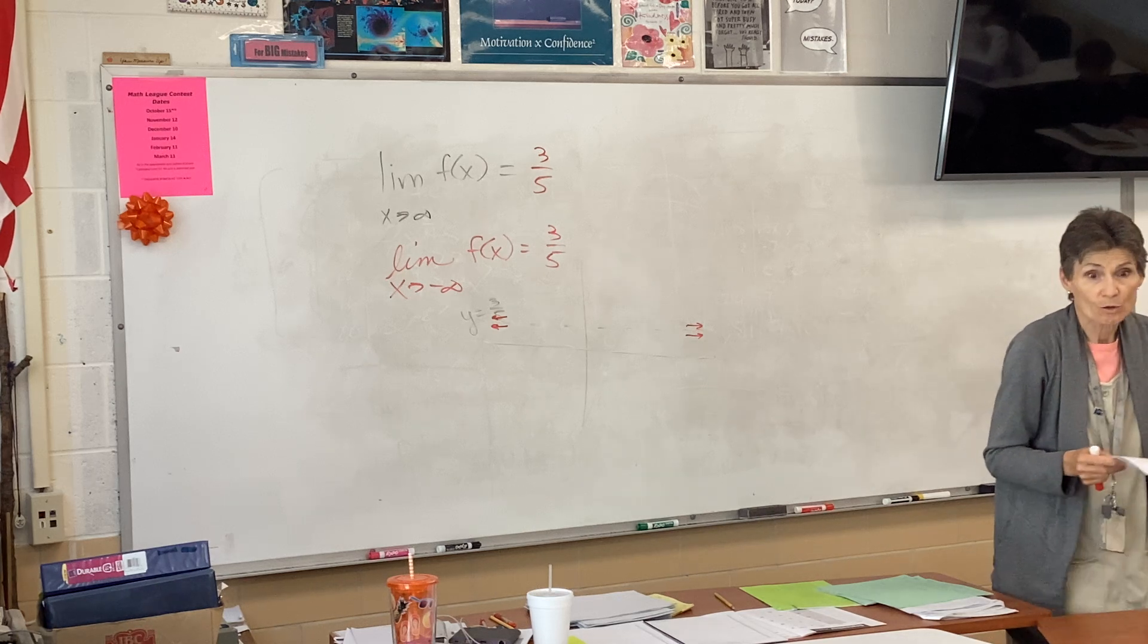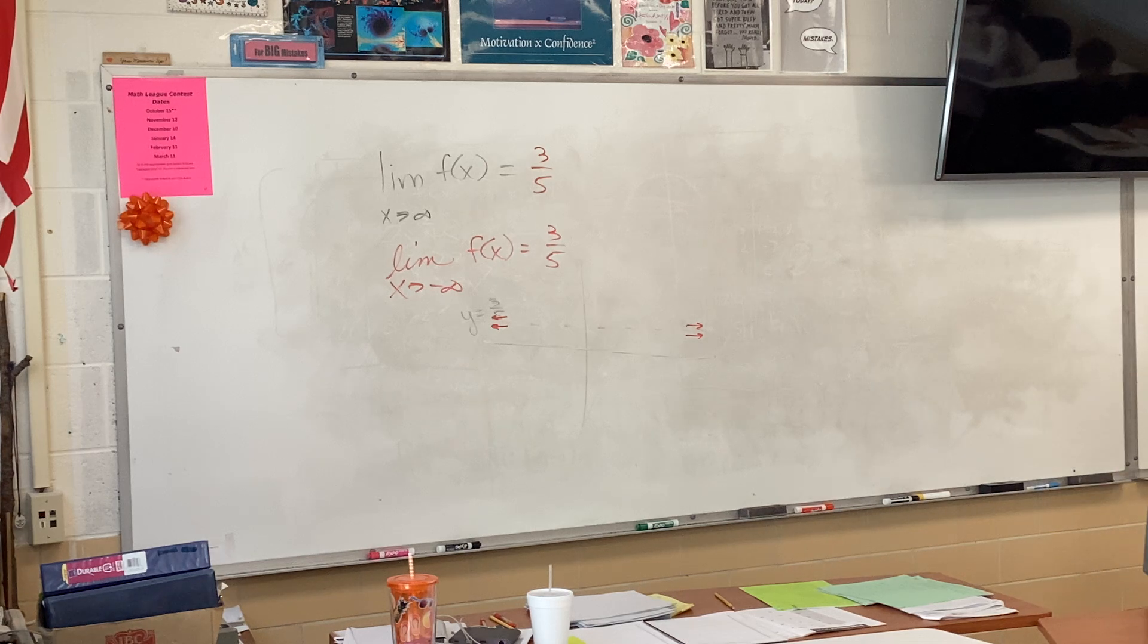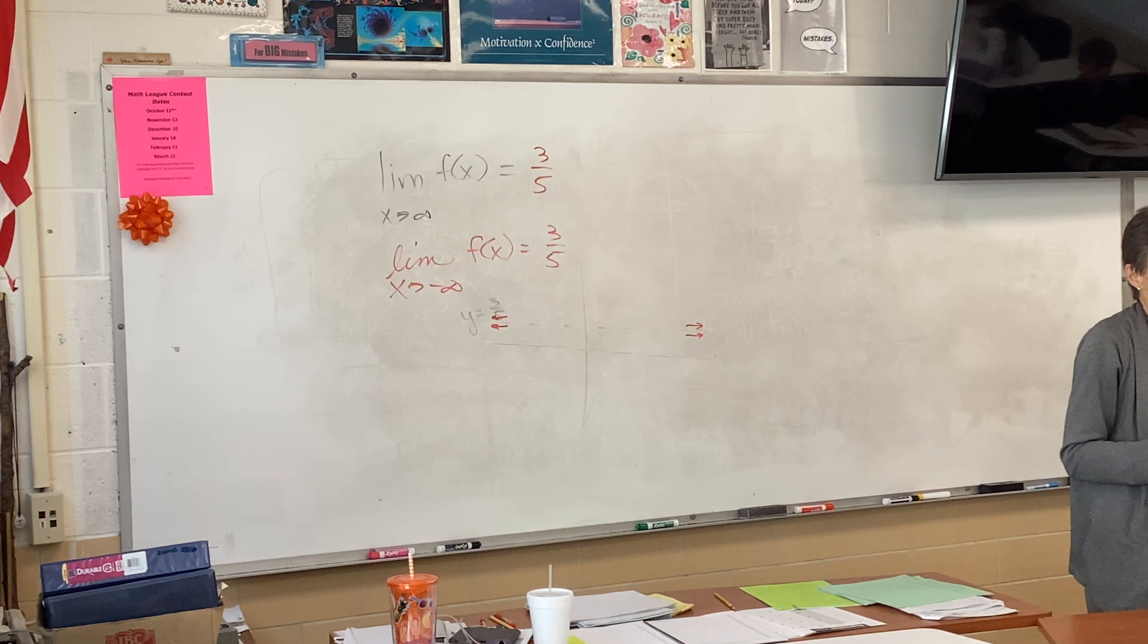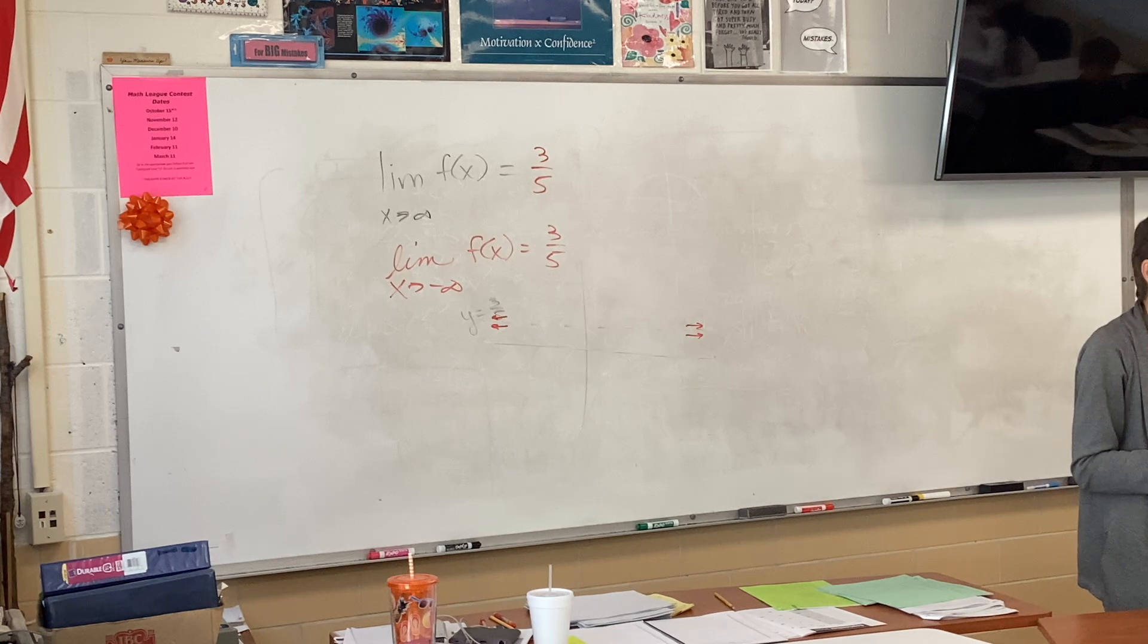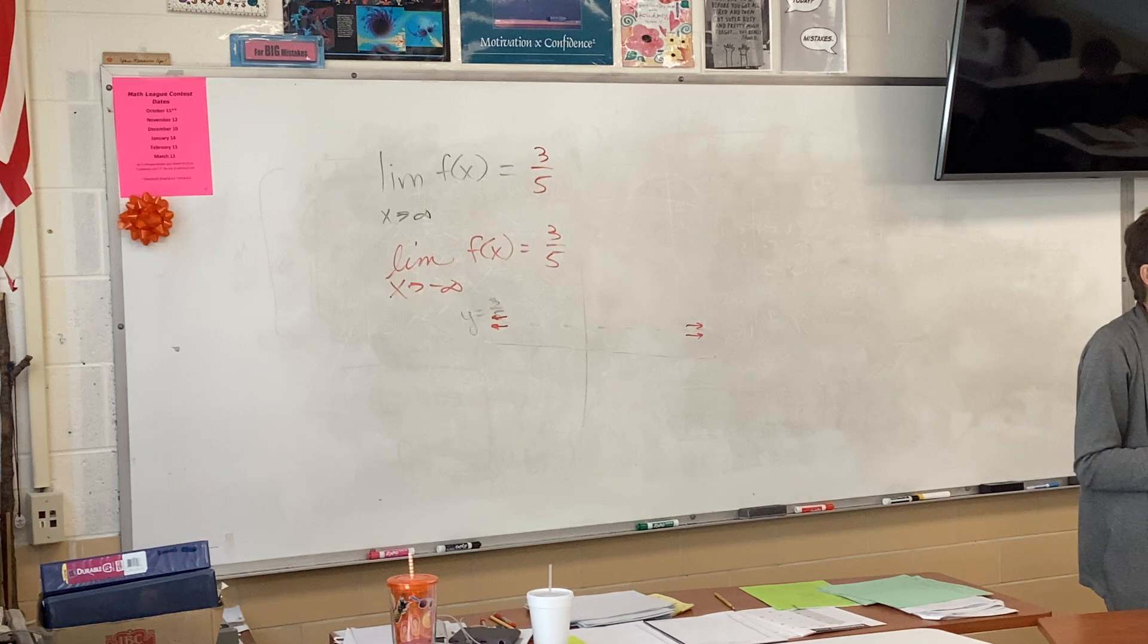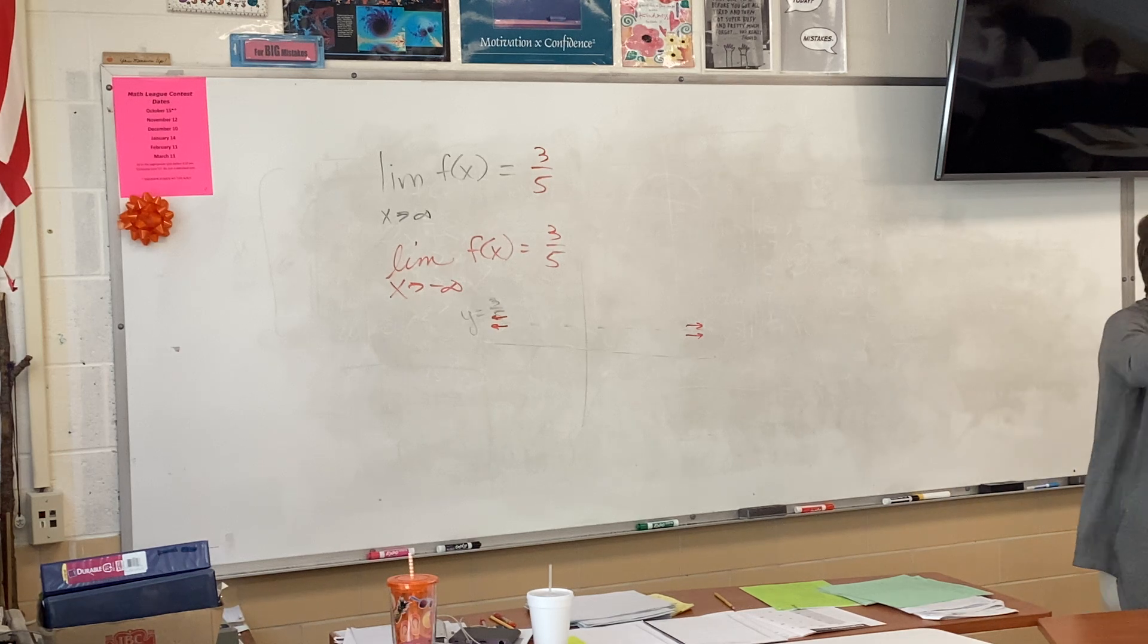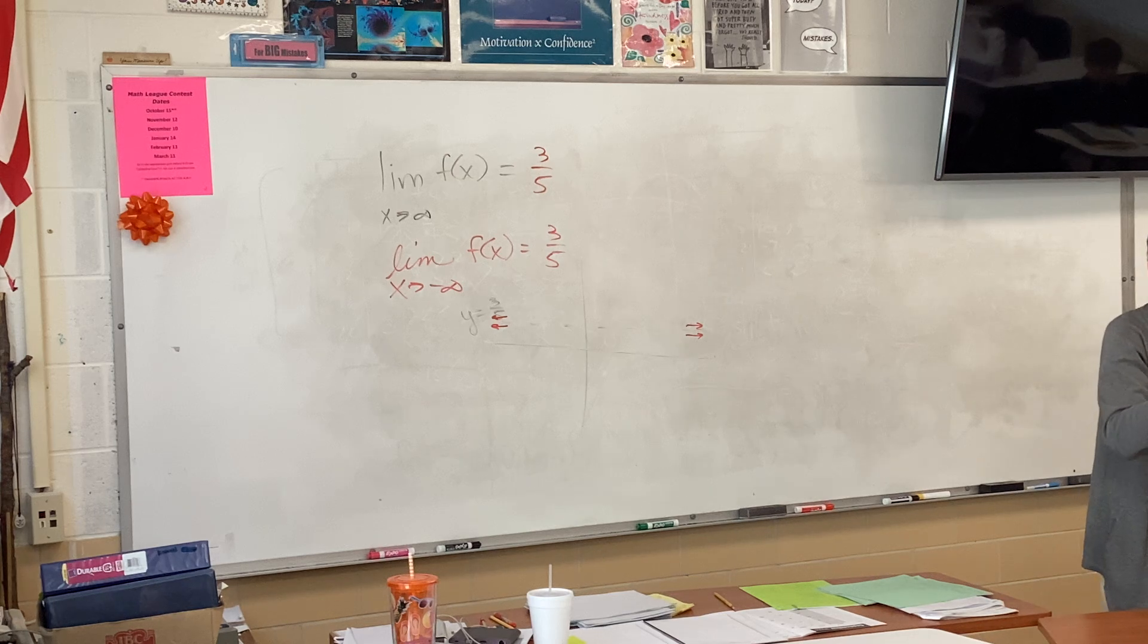What happens to a fraction when your denominator gets huge? It gets small. So your horizontal asymptote is Y equals 0. Y equals 0. Any time the power on the bottom... Don't memorize this. Make it make sense in your brain. Any time the power on the bottom is bigger, the fraction is going to get smaller, and our axis will be Y equals 0.